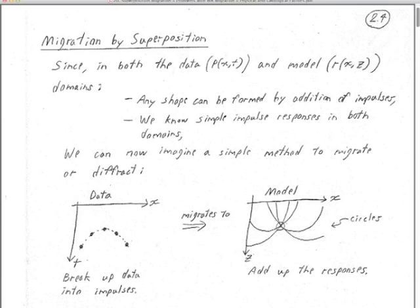Those are very popular methods, and the time to use them is before you know much about velocity — just to see where the reflectors end up, what's their proper dip, what's their proper location. Remember, migration takes dipping reflectors and moves them up dip and steepens them. You might even want to get a feel for that when you're recording data in the field, and you can do that very easily with these migrations.